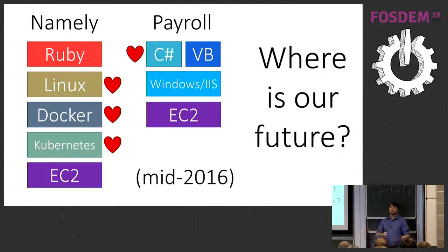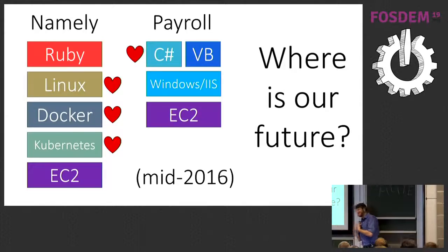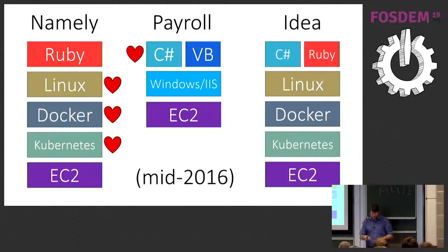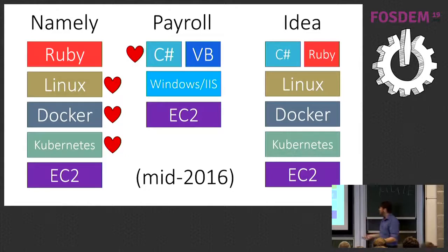We didn't want to convert all of our payroll code to Ruby — it didn't feel right for financial calculations. We decided our future stack would be whatever language the team writing the software wants, from a short list of approved languages, but underneath they'd all be running on Linux, in Docker, on Kubernetes, supported by EC2. We're actually going to EKS — Amazon's hosted Kubernetes — in about three hours, so it should be fun going to production with EKS very soon.